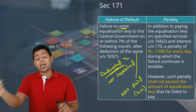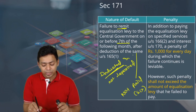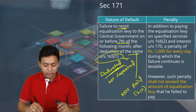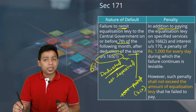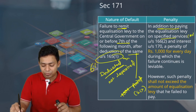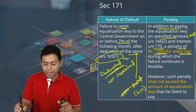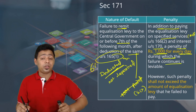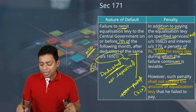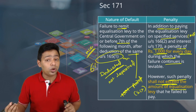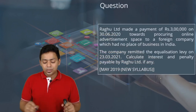For failure to remit — where you have deducted but not deposited, or not paid as an e-commerce operator — failure to remit equalization levy to the central government on or before the 7th of the following month after deduction, in addition to paying the equalization levy and interest under Section 170A, a penalty of 1,000 rupees every day during which such failure continues is leviable. However, such penalty shall not exceed the amount of the equalization levy — that is the upper cap.